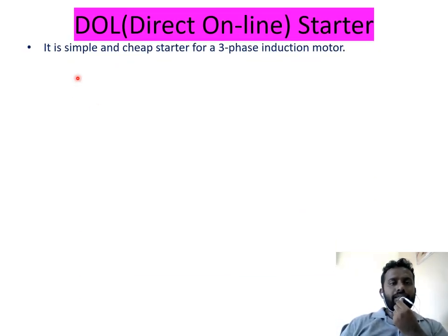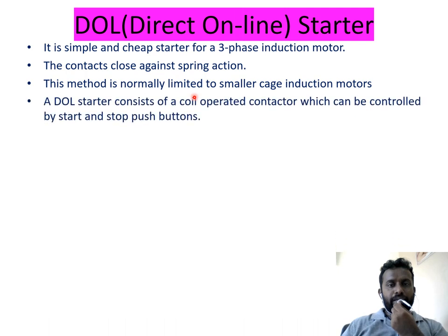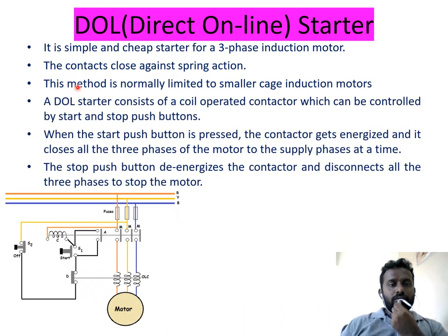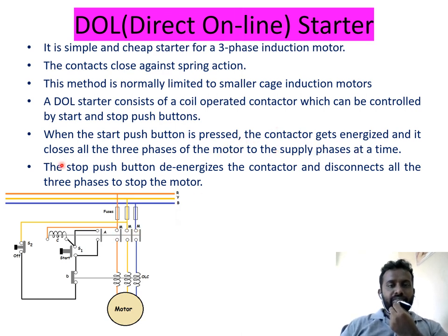DOL — Direct Online Starter: it is a simple and cheap starter for three-phase induction motors. This method is normally limited to small cage induction motors. A DOL starter consists of a coil-operated contactor controlled by start and stop push buttons. When the start push button is pressed, the contactor gets energized and closes all three phases of the motor to the supply. The stop push button de-energizes the contactor and disconnects all three phases to stop the motor.